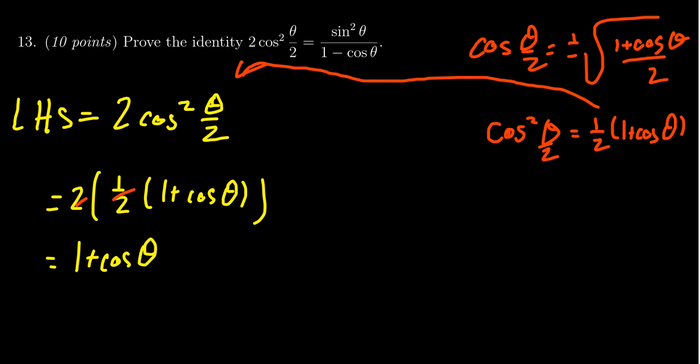At this point, maybe you get a little stuck on what to do. What I would do is look at where I'm trying to go: sin²θ/(1 - cosθ). I see 1 - cosθ at the bottom, and I currently have 1 + cosθ. So to me, this suggests I should multiply by the conjugate.